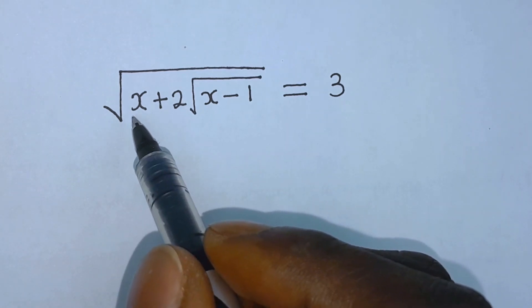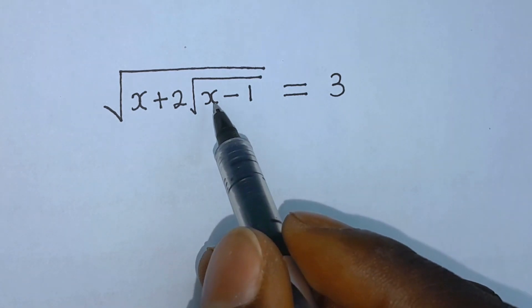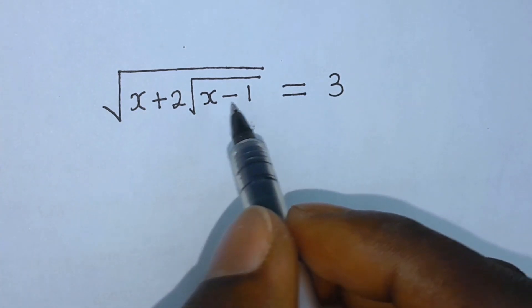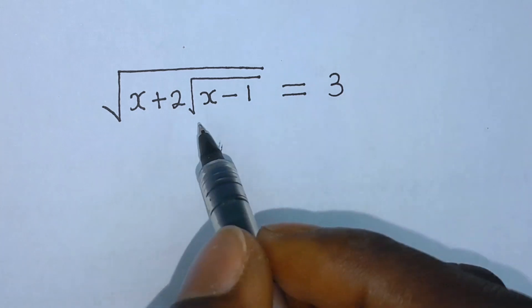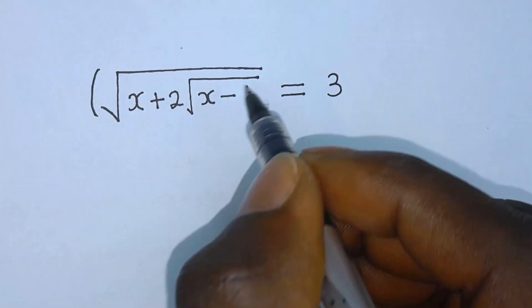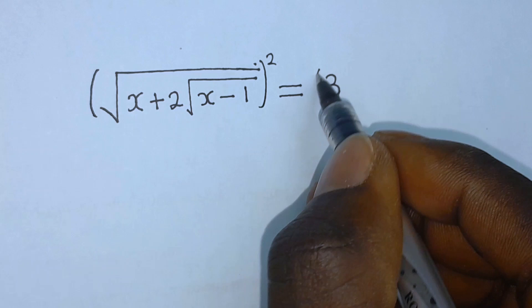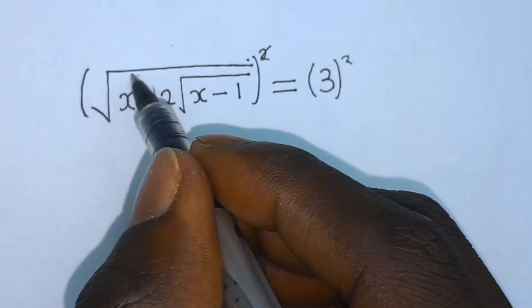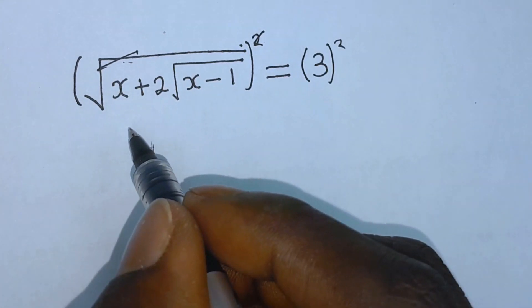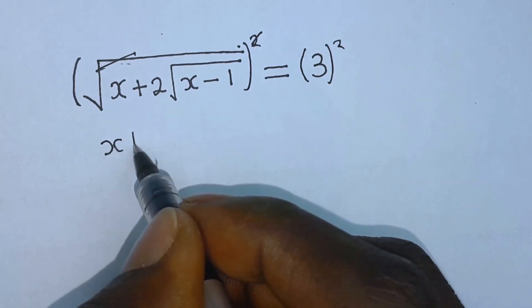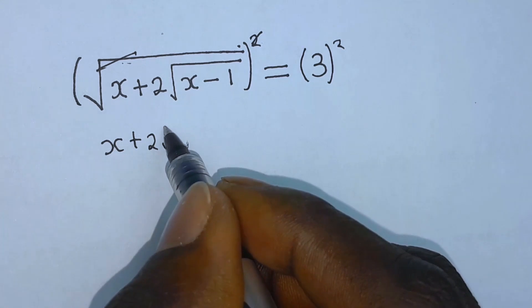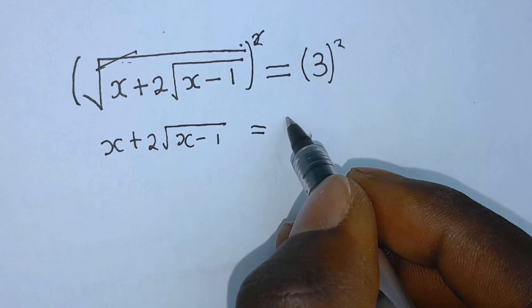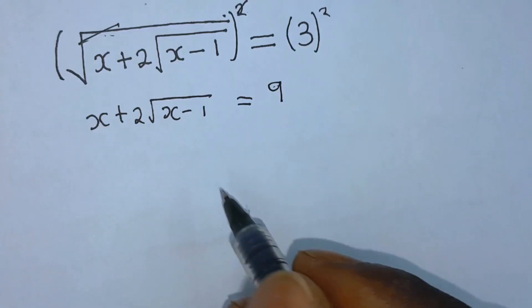We have square root of x plus 2 times square root of x minus 1, which equals 3. The first step is to square both sides of this equation. The squared cancels the square root on each term. We're left with x plus 2 times square root of x minus 1, which equals 3 squared, or 9.